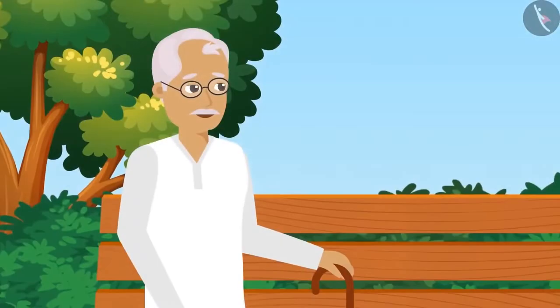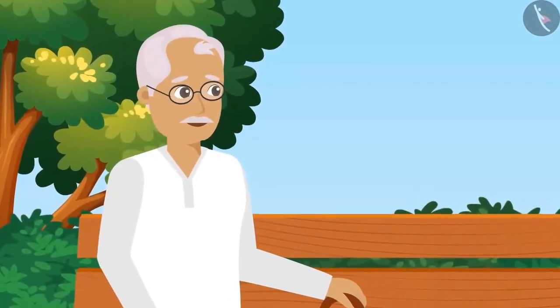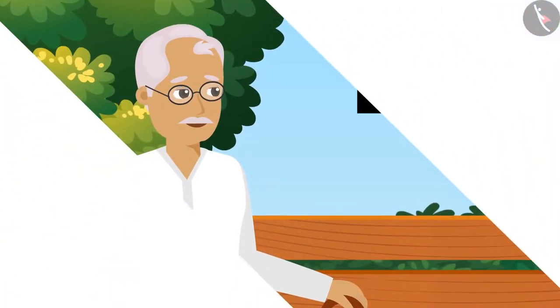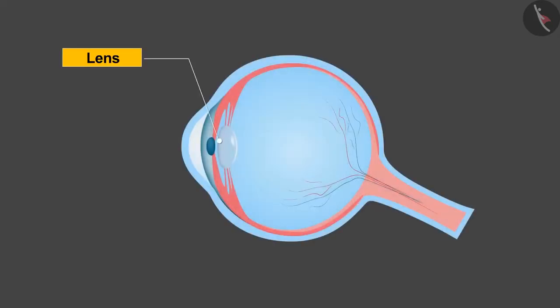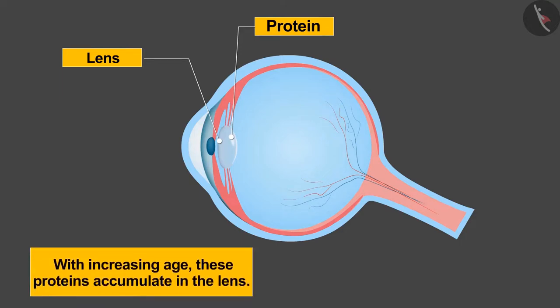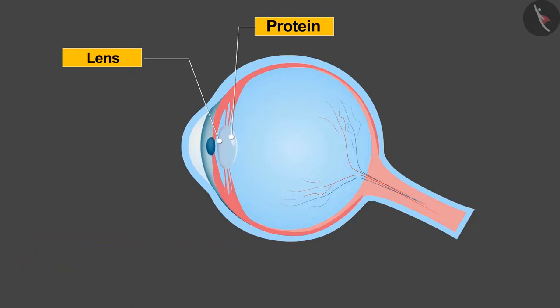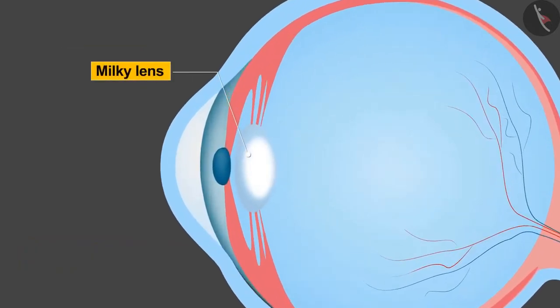Besides these three, there is another eye defect which people face during old age known as cataract. But what exactly is cataract? We all have protein in the lens of our eyes. With increasing age, these proteins accumulate in the lens and after a certain time the lens becomes milky in color. Due to this, the lenses lose its transparency and there is difficulty in seeing.